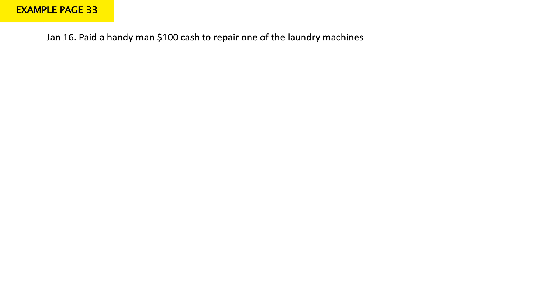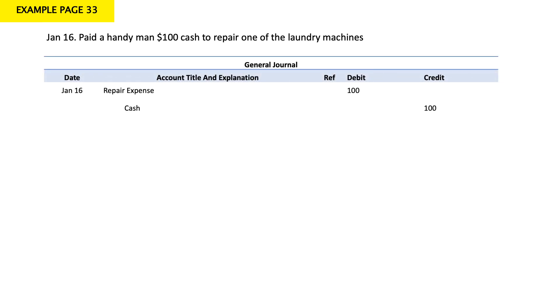January 16: they paid a handyman $100 cash to repair one of the laundry machines. We incurred a repair expense and paid cash. My cash decreased by $100 and my expense increased by $100. My journal entry: debit repair expense, credit cash by $100.